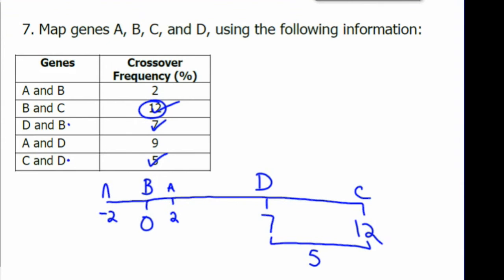So maybe A is down here past B. If we put it at negative 2, then we can check. Is that 9 away from 7? Yes, it is. That means the order of genes on this chromosome are ABDC or we could say it CDBA. And we're done.